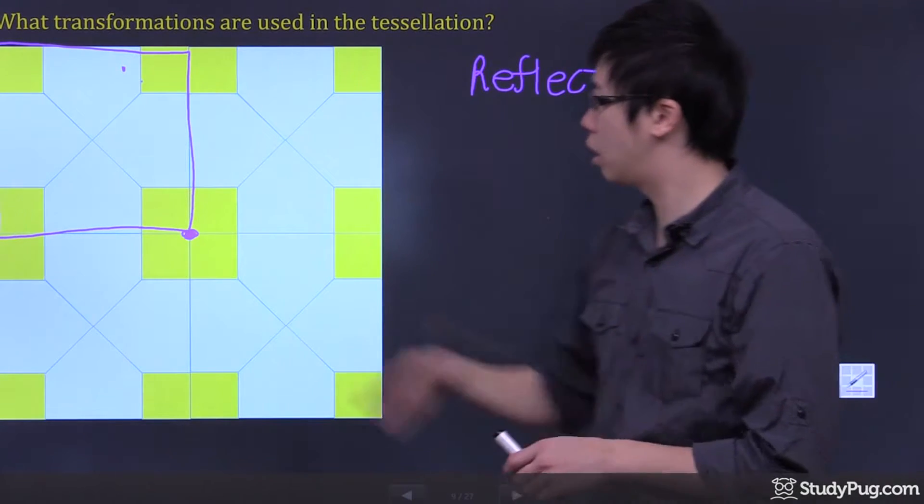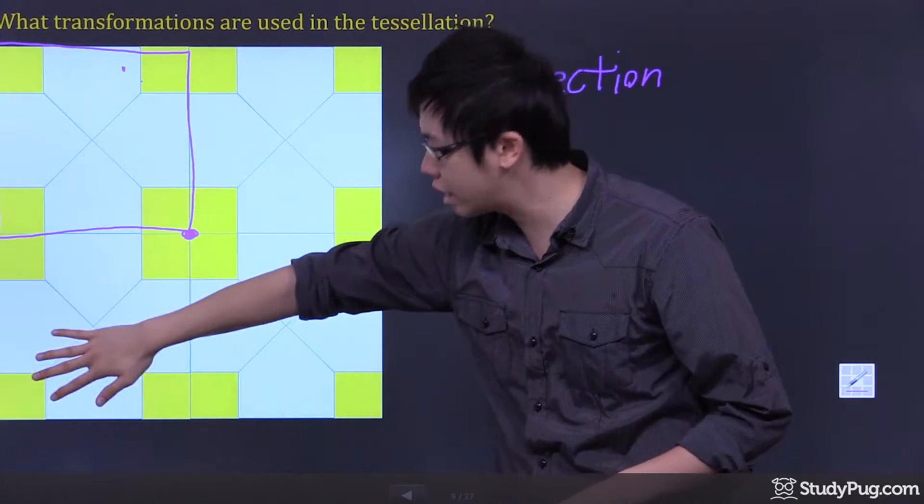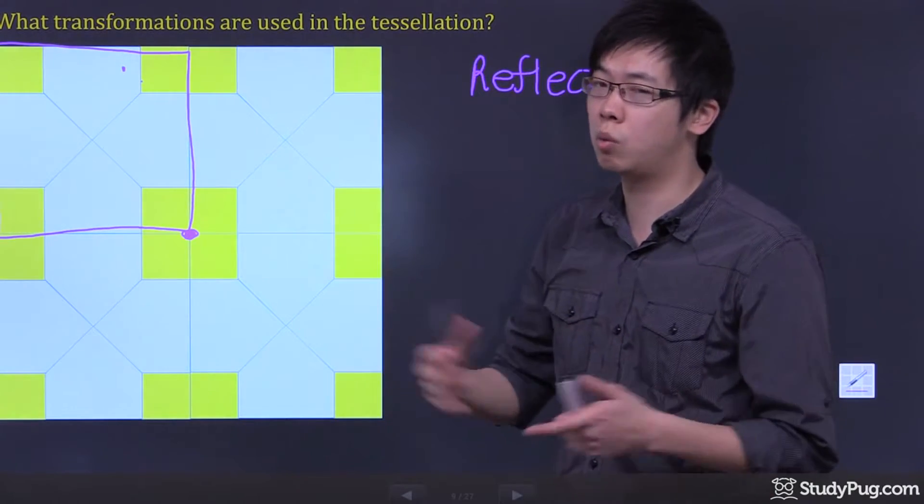And how do we reflect this? You could reflect on the x-axis, and then reflect on the y-axis, so it works, right?